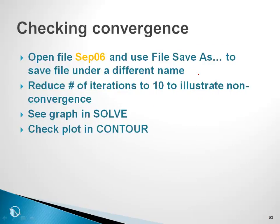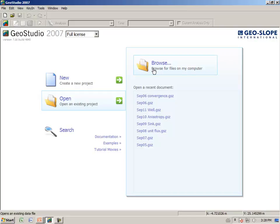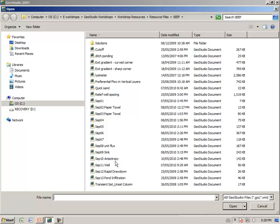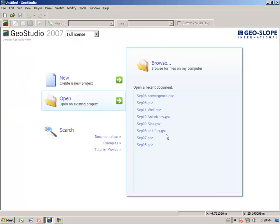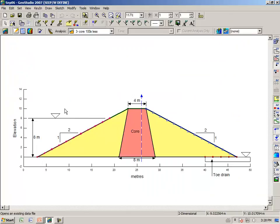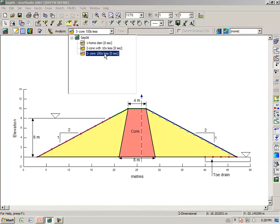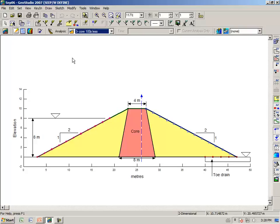Let's go to GeoStudio and illustrate some issues and how you can control the convergence. And to particularly show you how to check the convergence. Let's open up SEP06. This is our example with the core that we had looked at earlier. We're going to look at analysis number three, where the core has a saturated conductivity 100 times less than the shell material.